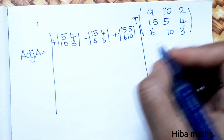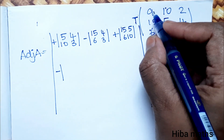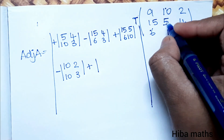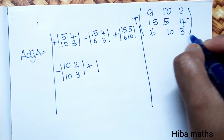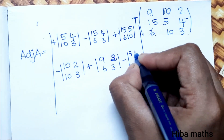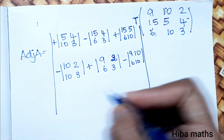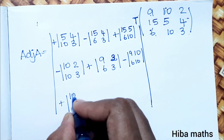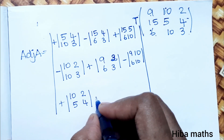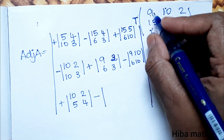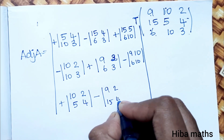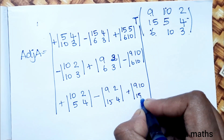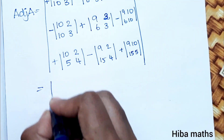Computing all cofactors row by row: Second row first column uses submatrix [10,2; 10,3]. Second row second column uses [9,2; 6,3]. Second row last column uses [9,10; 6,10]. Last row first column uses [10,2; 5,4]. Last row second column uses [9,2; 15,4]. Last row last column uses [9,10; 15,5].